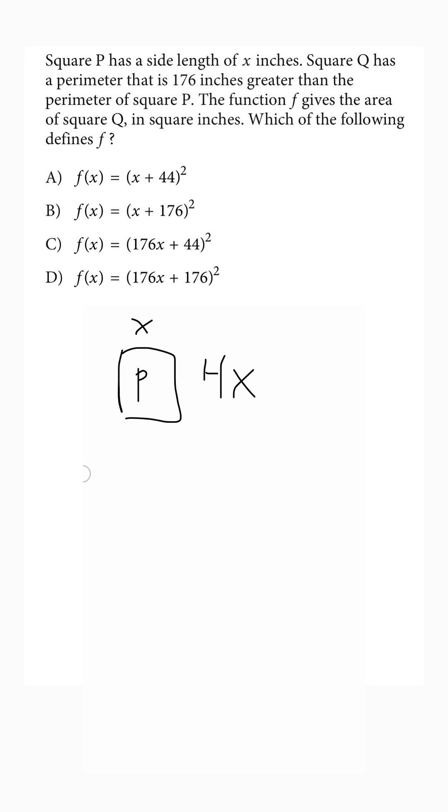Next, let's draw square Q. Let's say that the side length is x plus some b. Then we know that the perimeter would be 4 times (x plus b).